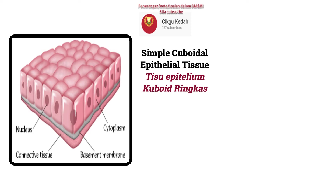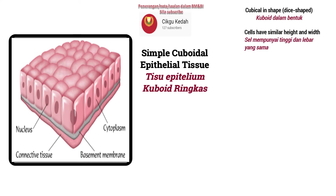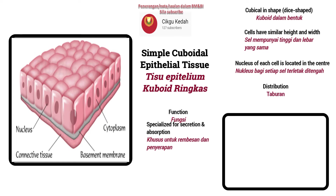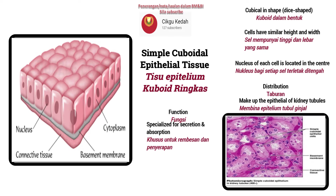Simple cuboidal epithelial tissue — cells are cubical in shape, with similar height and width. The nucleus of each cell is located in the center. Function: specialized for secretion and absorption. Distribution: makes up the epithelium of kidney tubules.